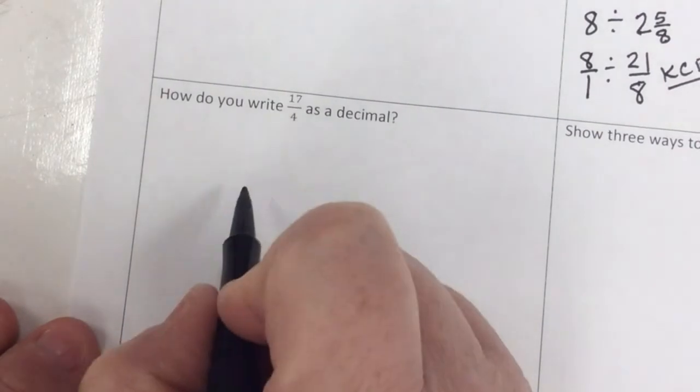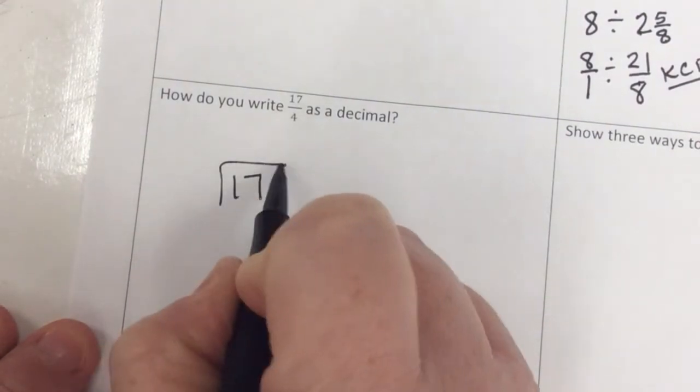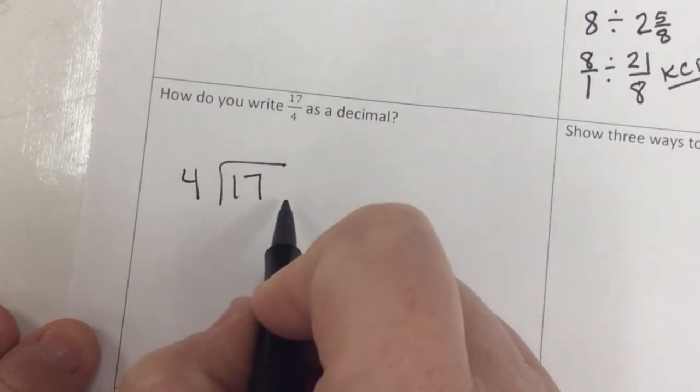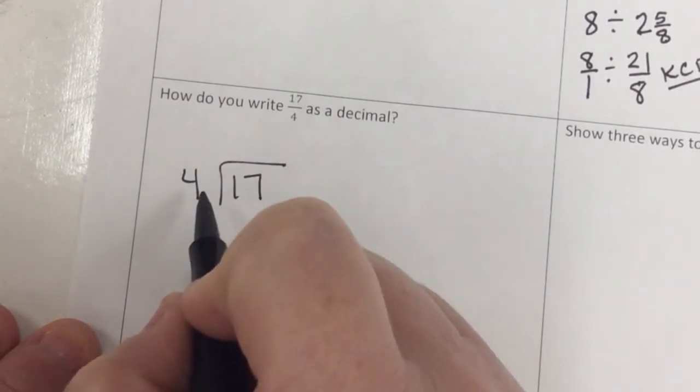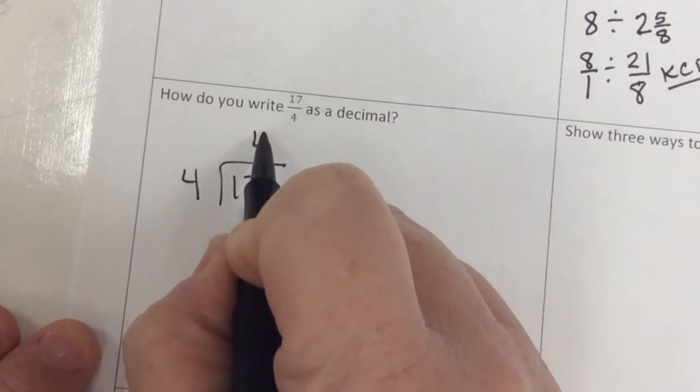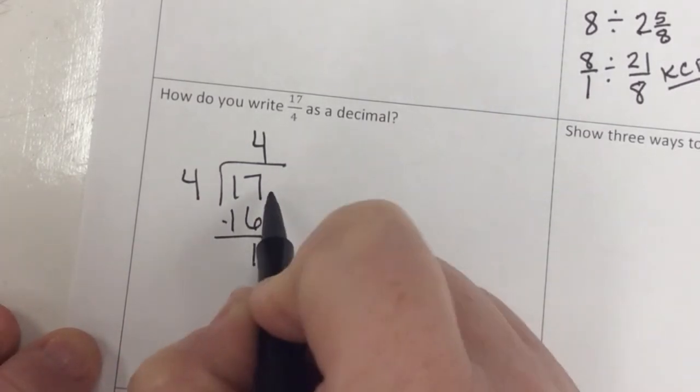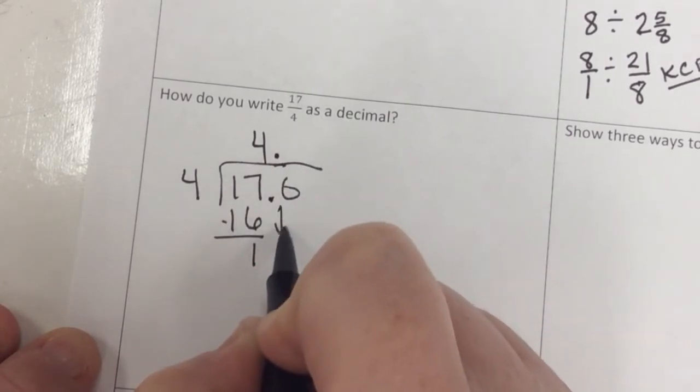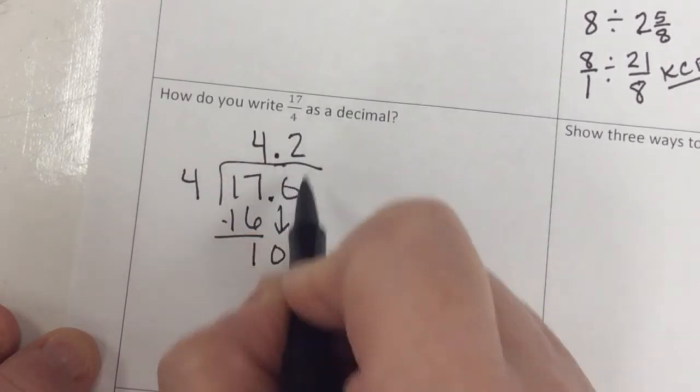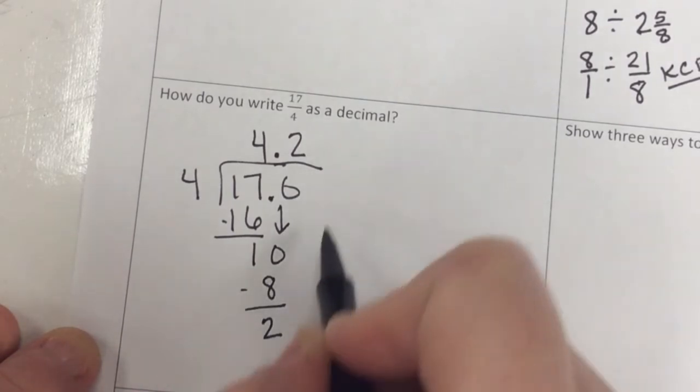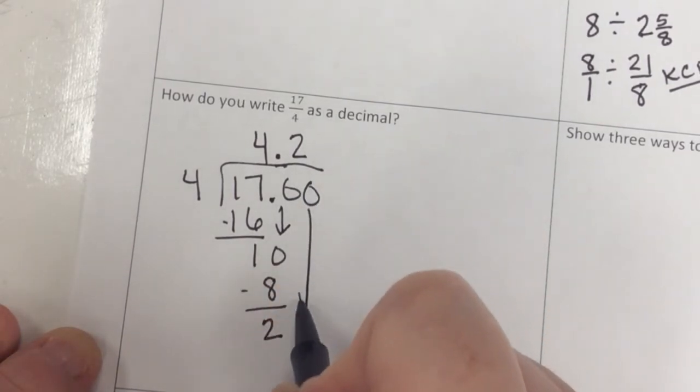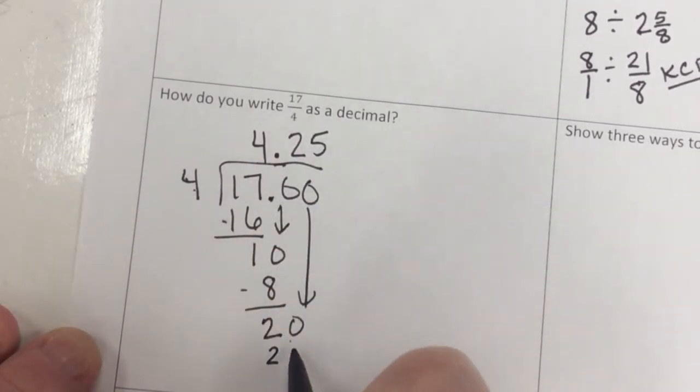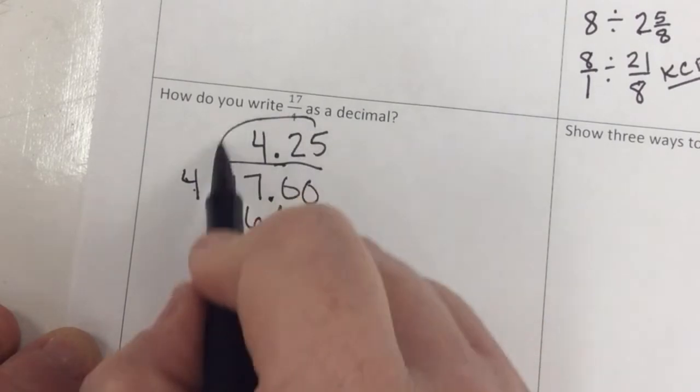17/4 as a decimal. We just do top dog. We do division here, just like we would to get it to a mixed number. Except we don't use our remainder as a fraction. We just add a decimal. So 4 times 4 is 16. And I subtract and get 1. So I just add my decimal here and I keep going. 4 times 2 is 8. And I subtract and get a 2. I can add a decimal and keep going. 4 goes into 20. 5 times 4 times 5 is 20. So that's my answer.